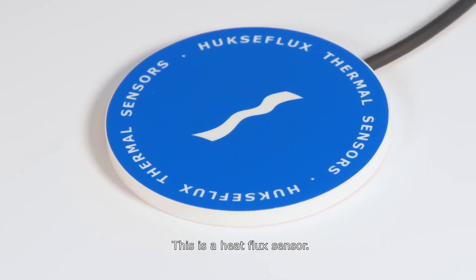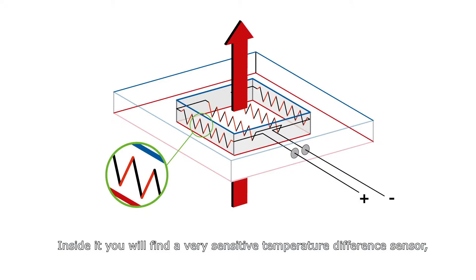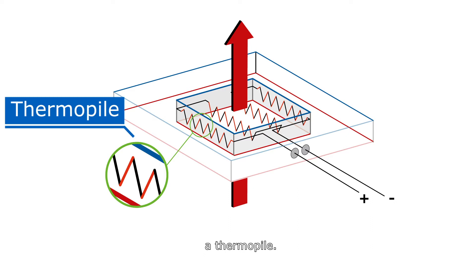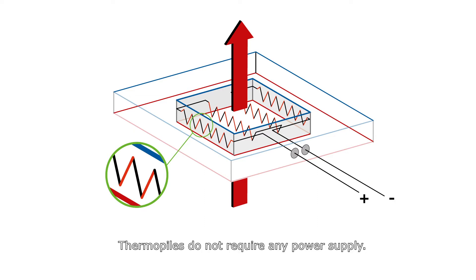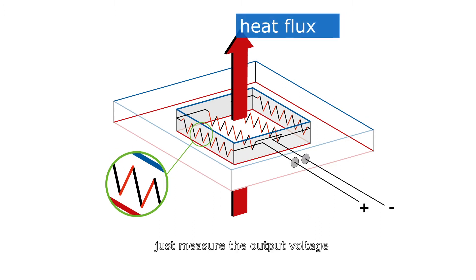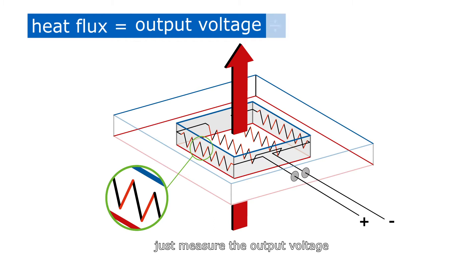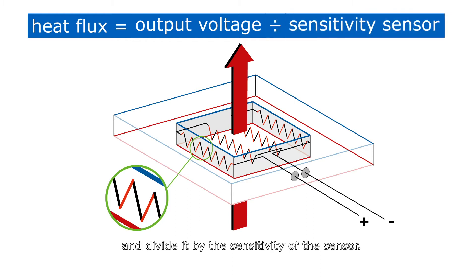This is a heat flux sensor. Inside it, you will find a very sensitive temperature difference sensor, a thermopile. A thermopile generates a voltage output signal proportional to the local heat flux. Thermopiles do not require any power supply. Calculating the heat flux is easy. Just measure the output voltage and divide it by the sensitivity of the sensor.